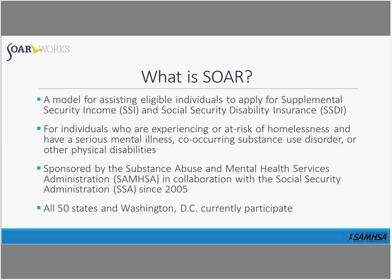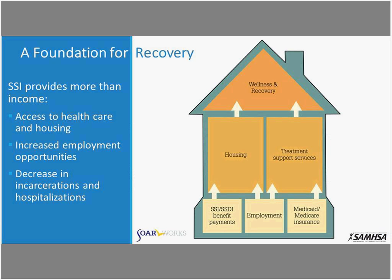The great thing about SOAR is that it is active in all 50 states and Washington, D.C. Through your work, you've no doubt seen how critical income stability is in accessing housing, treatment, and other supportive services. Our goal is to make the process of accessing benefits for eligible individuals easier and quicker, helping people obtain housing stability, access treatment, employment, and their goals in life, while decreasing hospitalizations and providing a foundation for recovery.